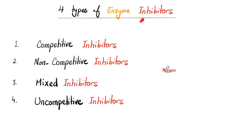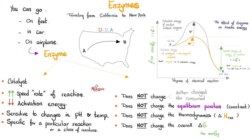Because there are four types of enzyme inhibitors: competitive, non-competitive, mixed, and uncompetitive. Today we're talking about number three.